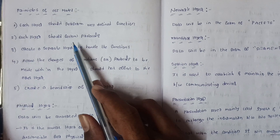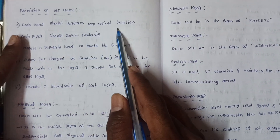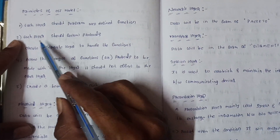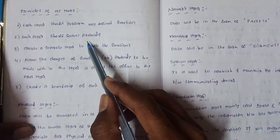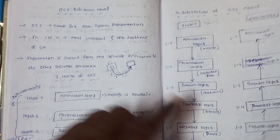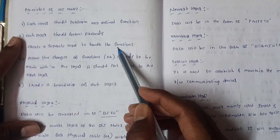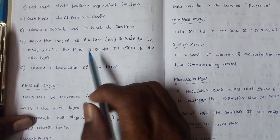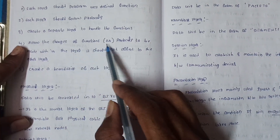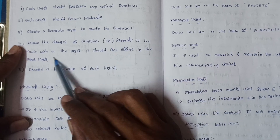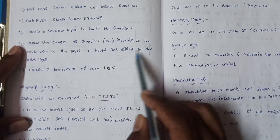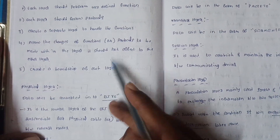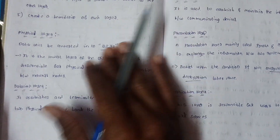The principles of the OSI model are: each layer should perform a well-defined function; each layer should follow protocols; create a separate layer to handle each function; allow changes to functions or protocols within a layer without affecting other layers; and each layer creates clear boundaries separating it from adjacent layers.